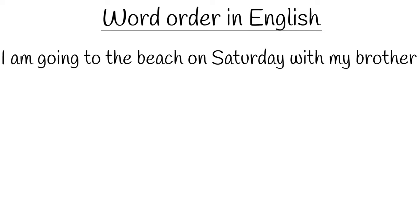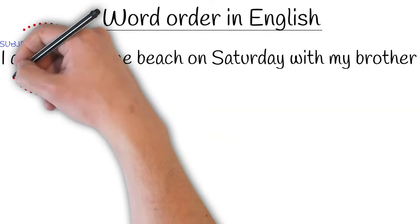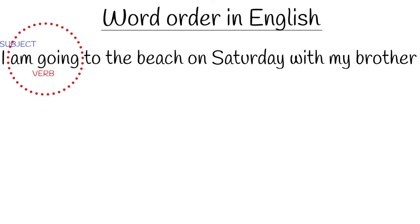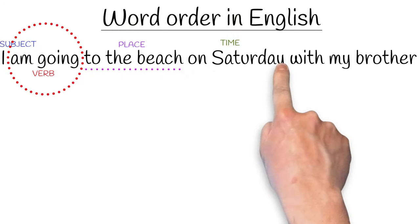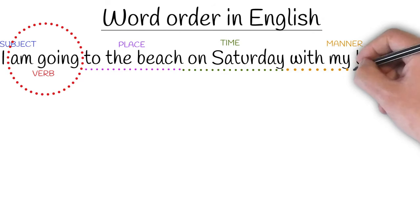Notice the order of the words in English. We start off with the subject — that is 'I' — the thing doing the action in this sentence. Then we have the verb, which in this case is two words: 'am going.' After the verb, we have three additional pieces of information: firstly, the place — to the beach; secondly, the time — on Saturday; and thirdly, the manner — with my brother.